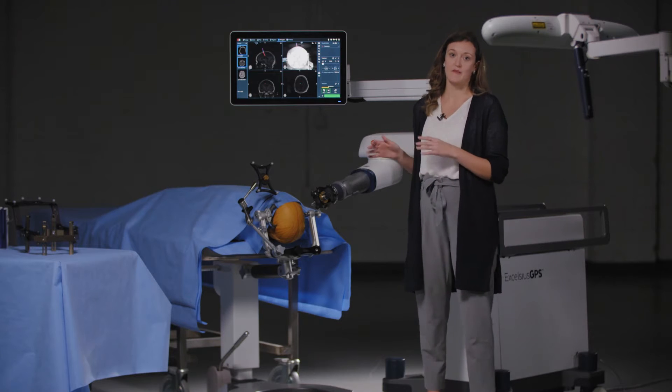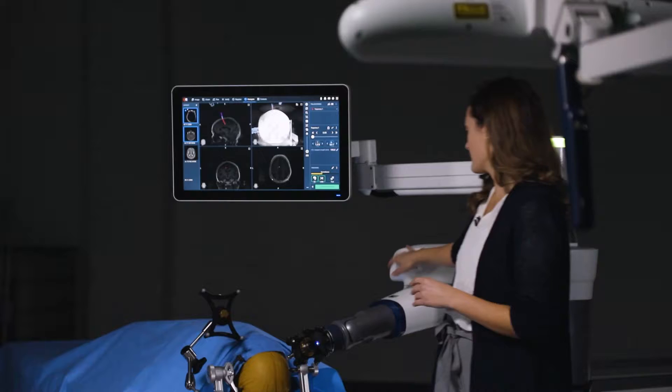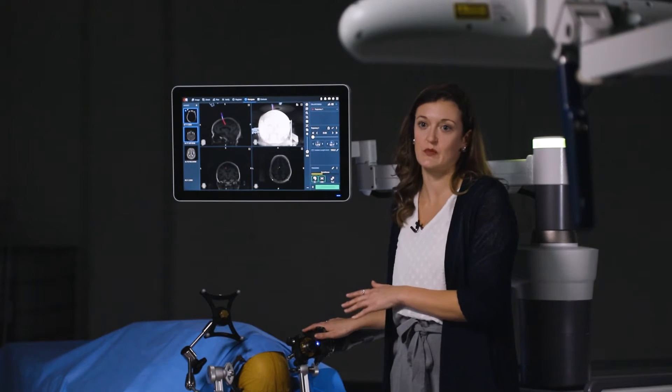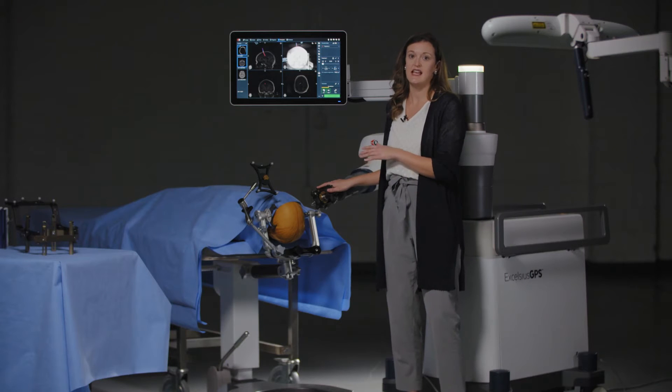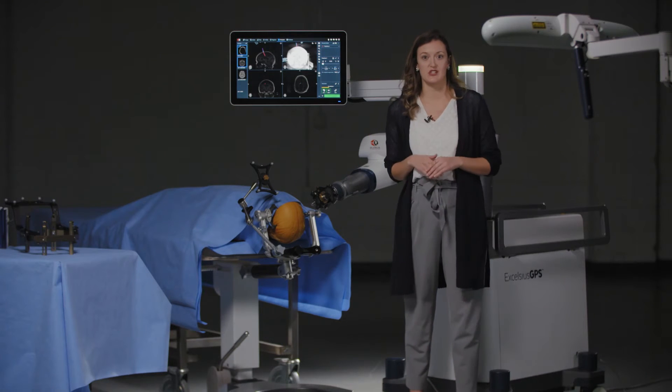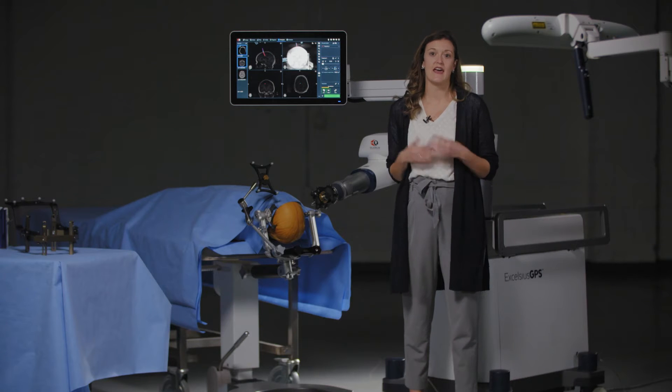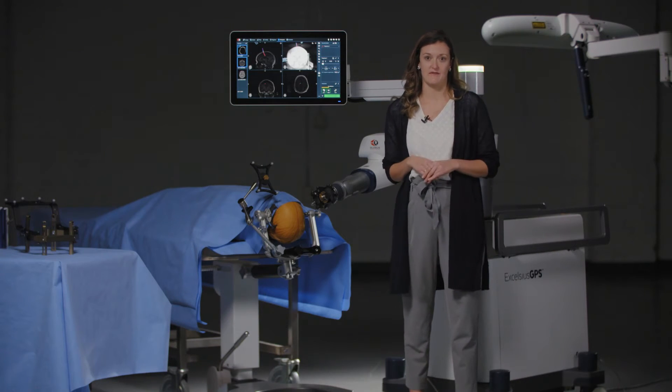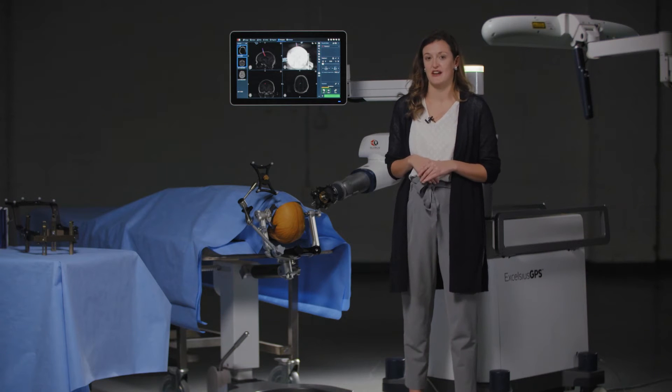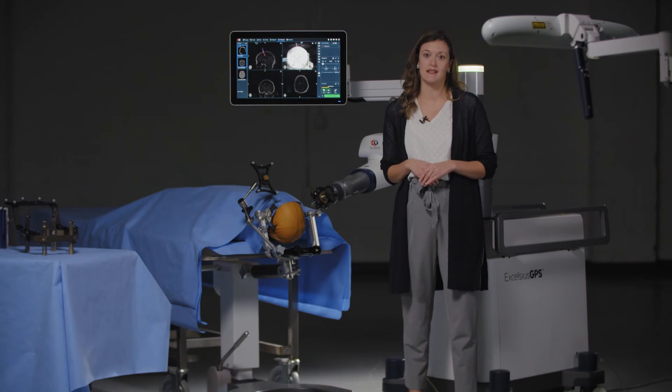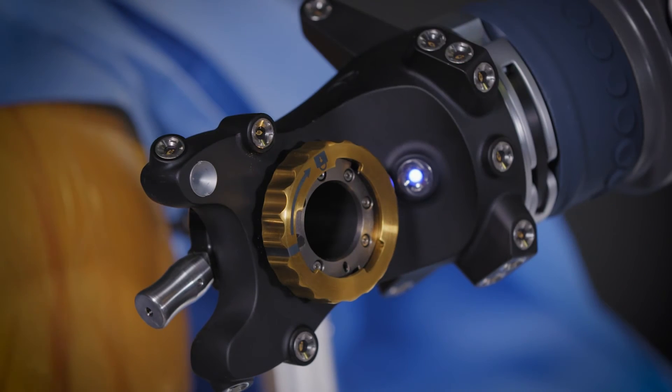This stability is transferred from the base station through the rigid robotic arm and to the interchangeable guide end effector. This end effector is specific to cranial procedures and acts as the interface between the instruments and the robotic system, through active navigation and precise alignment. The modular design of this end effector adapts to different instrument diameters through a series of interchangeable guide tubes.